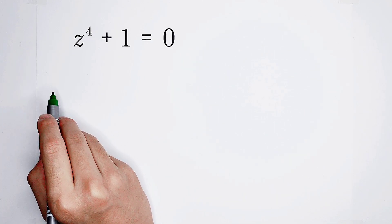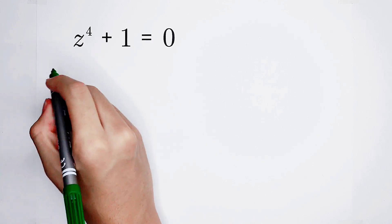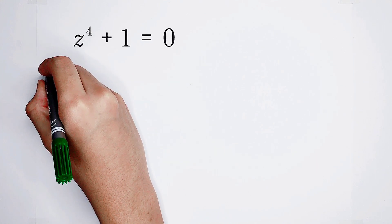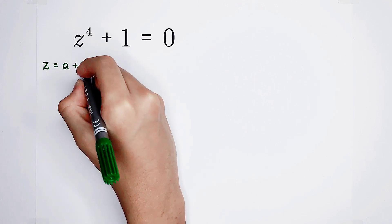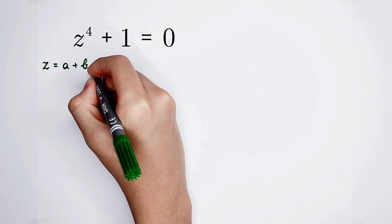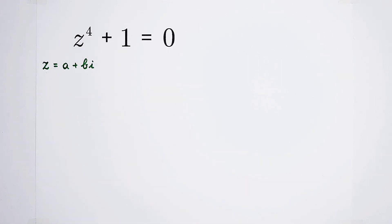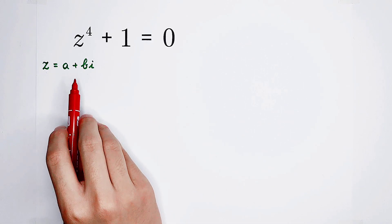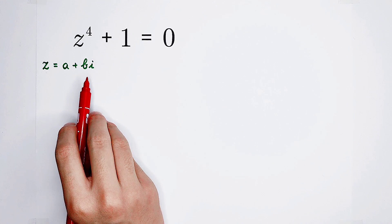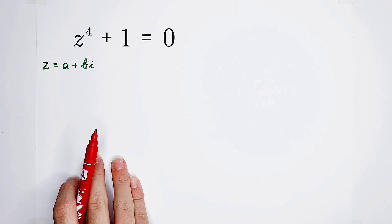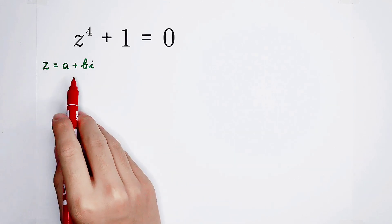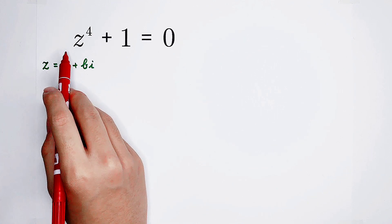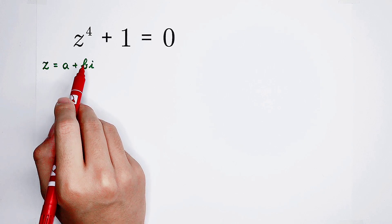A complex number has its form. We can suppose z equals a plus b times i. Every complex number has this form — a plus b times i, where i is the square root of negative 1, the imaginary unit. Do you know that all the real numbers are also complex numbers? We can substitute a plus bi for z.